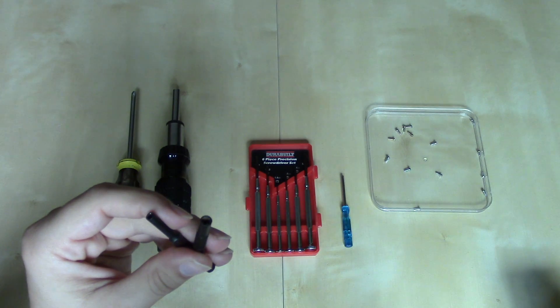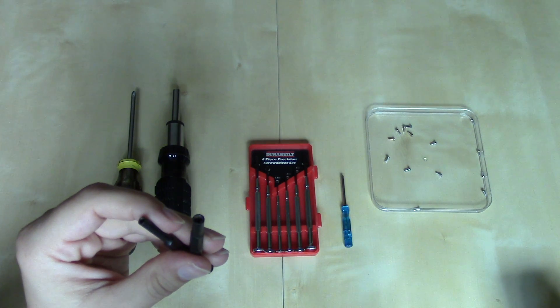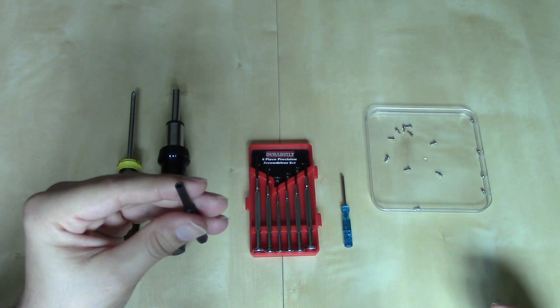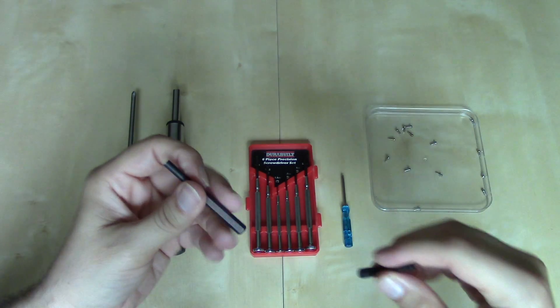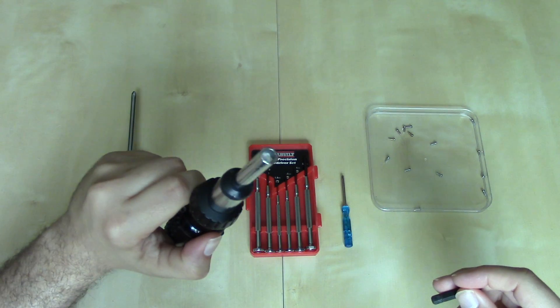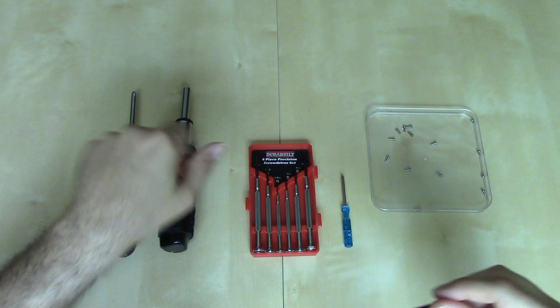The larger one is typically for taking out the screws in a console, and the smaller one is typically for taking out the screws in a cartridge for cartridge-based consoles. And these are just the bits, they don't have the handles on them. You'll need some sort of screwdriver handle to insert the bits into.